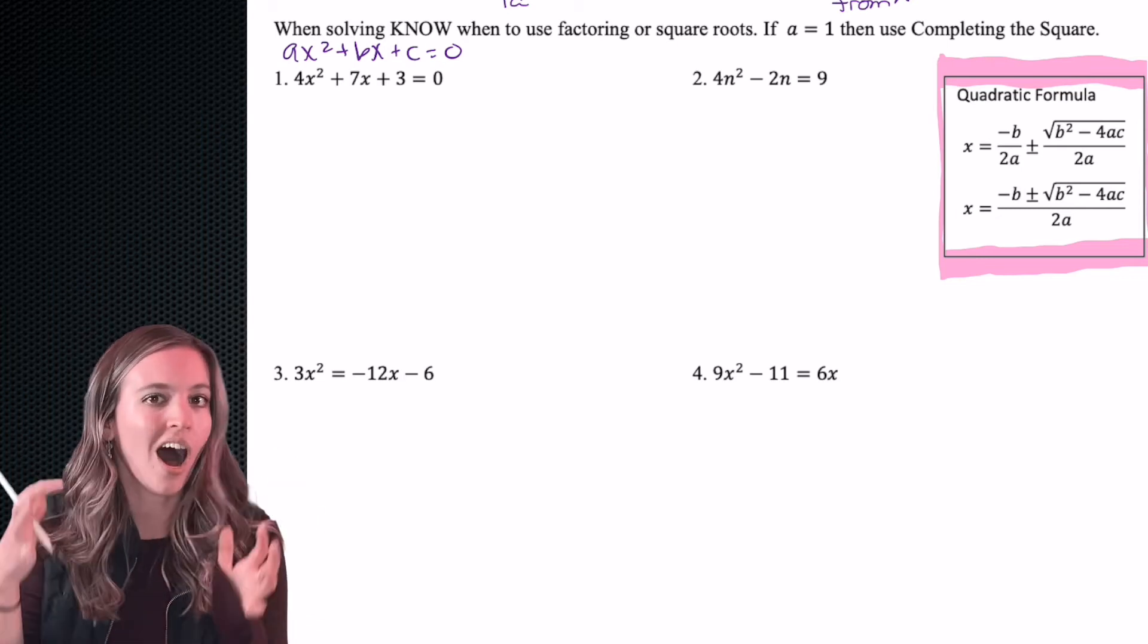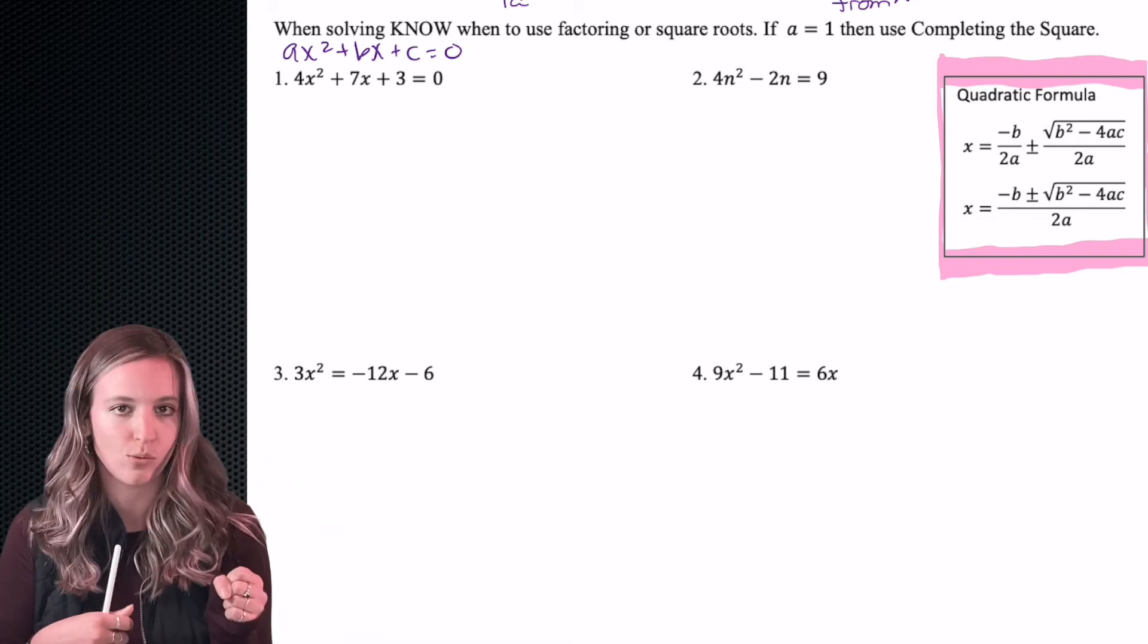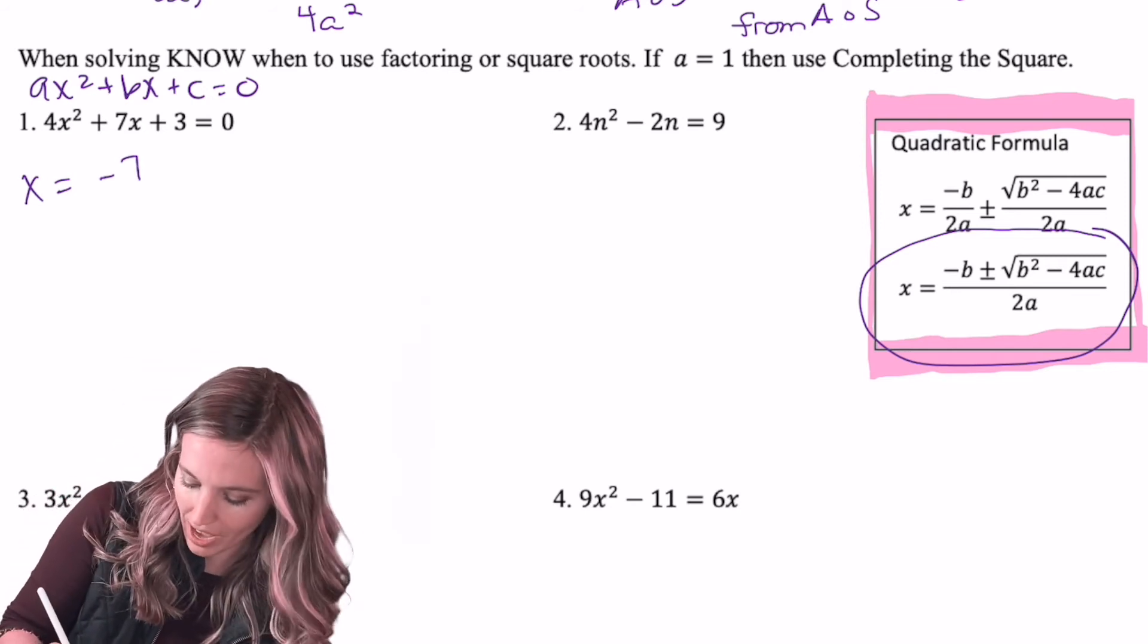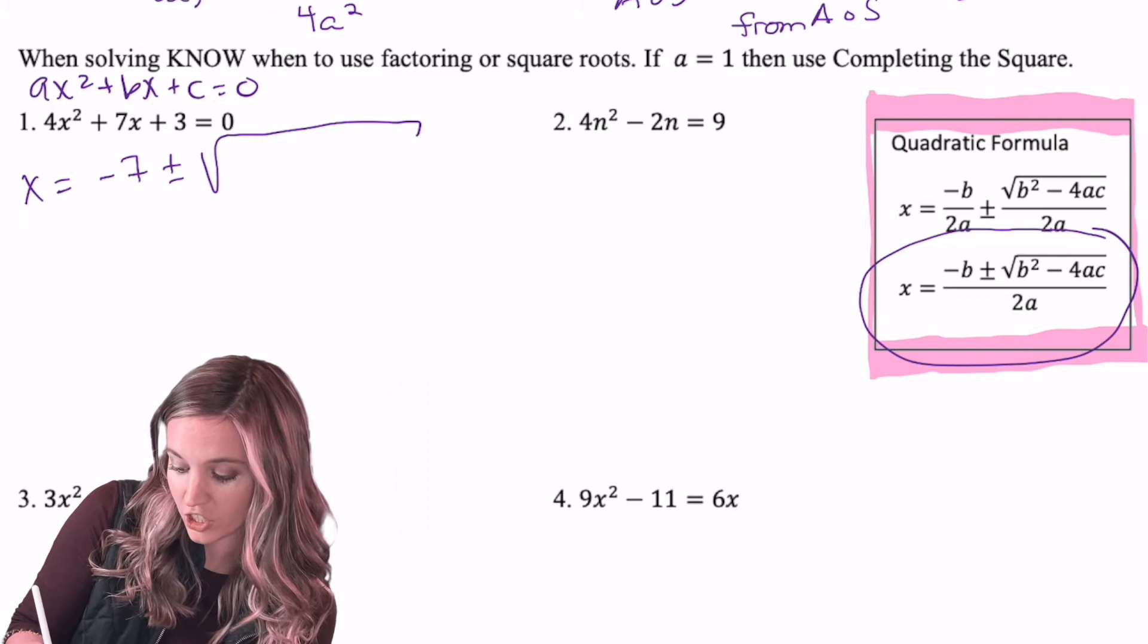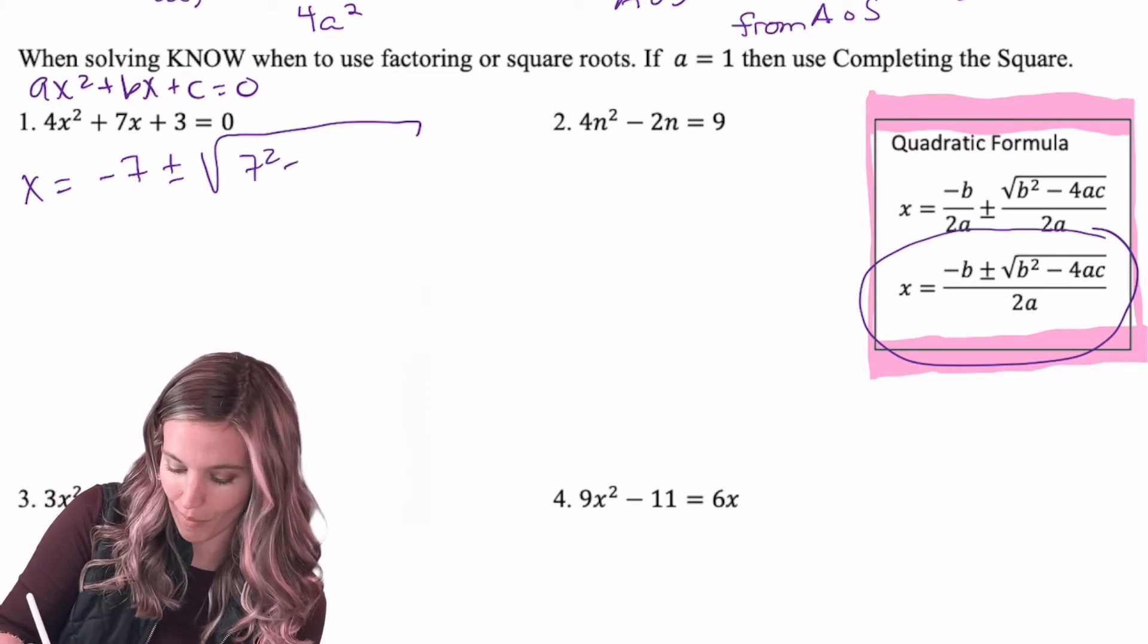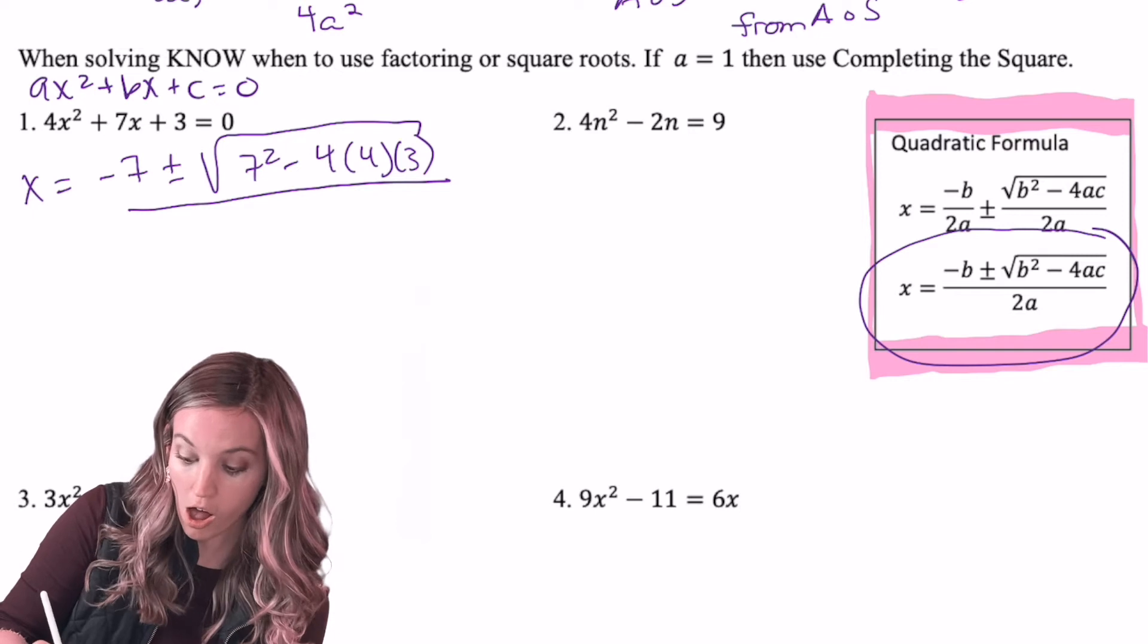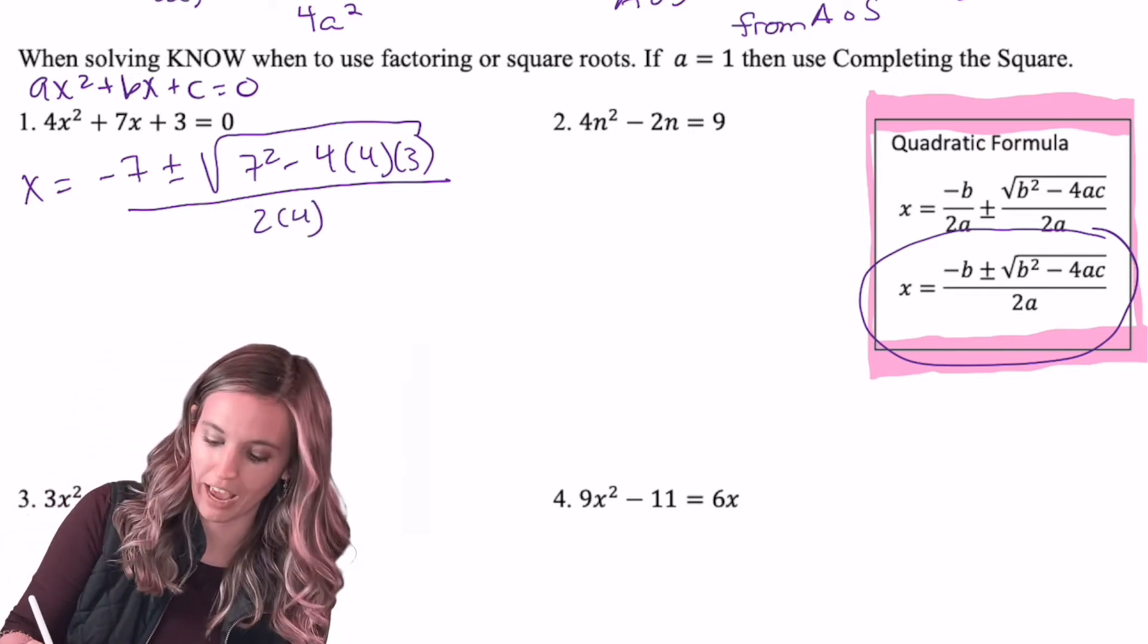Okay, now remember a, b, and c are the constants. So I'm not going to take x when I look at a. I'm not going to take x when I look at b. So our quadratic formula goes, I'm going to use this one right here, x equals negative b. So I have 7 for b. So negative 7 plus or minus a big giant square root b squared, so 7 squared, minus 4 times a times c. So 4 times 4 times 3. All over, all over, 2a. So 2 times 4.